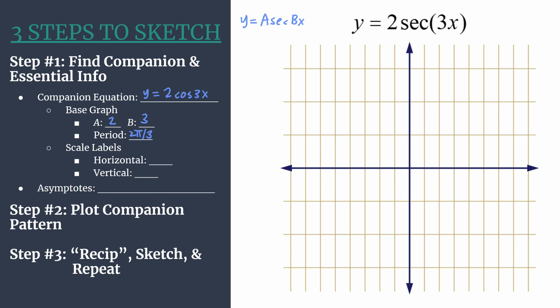Now we can choose how to label our axes. For the horizontal labels, we take our period and divide by 4 so that the key points align nicely with our tick marks. So we take 2π over 3 divided by 4, which equals 2π over 12 or π over 6.